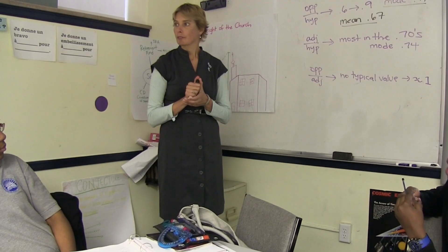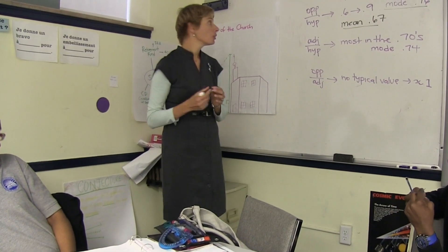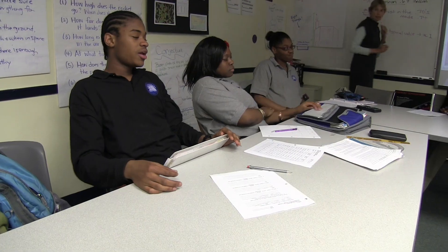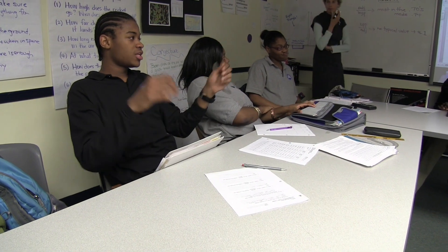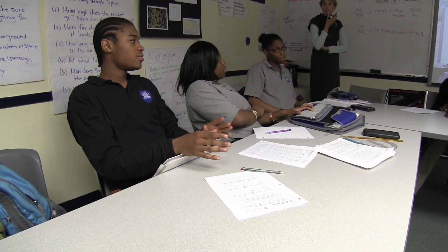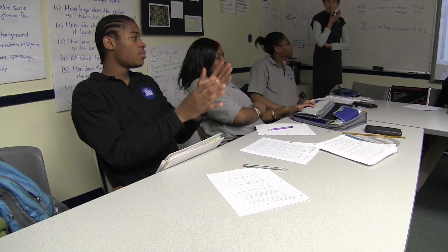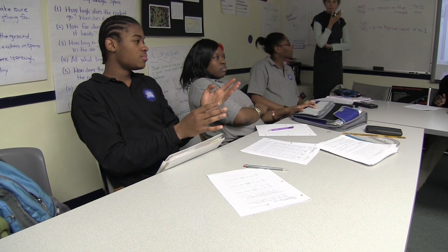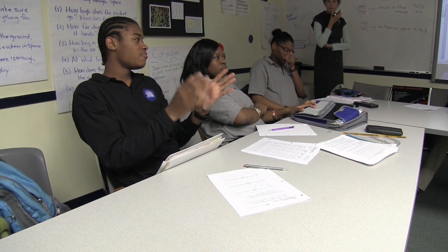I got one. For any column, you're supposed to put the numbers in order. Then you just basically cross them out until you find the middle. But if there's two numbers in the middle, you have to add them and then divide by two. So you find the median. Nice job.